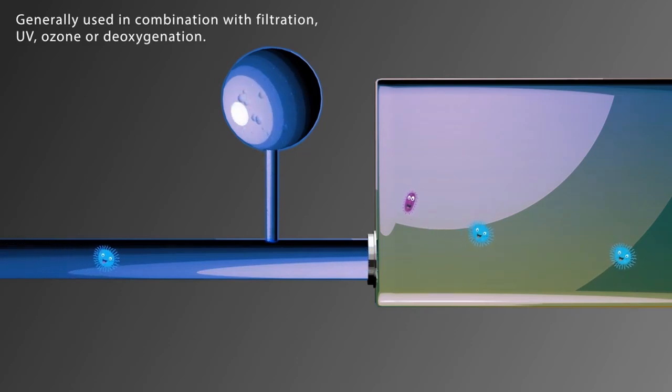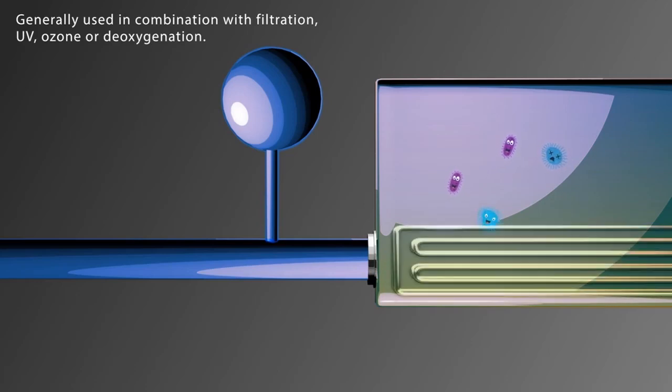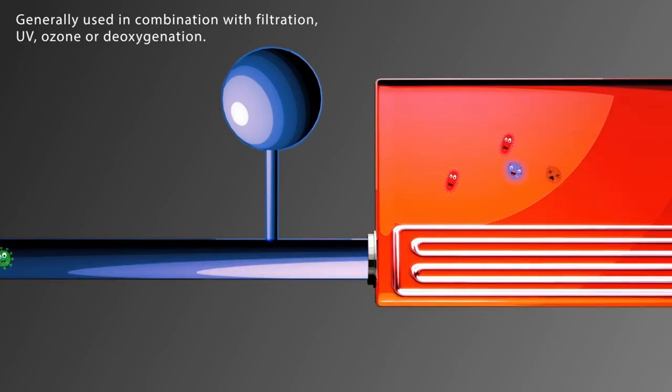If a ship is already installed with an inert gas system, then a deoxygenation system will not require more space on board ships. Deoxygenation can be used in combination with pasteurization, where the ballast water is heated to reach a temperature that will kill the organisms. A separate heating system can be used to heat the ballast water in the tanks, or the ballast water can be used to cool the ship's engine, thus disinfecting the organisms with the heat taken from the engine.